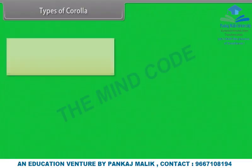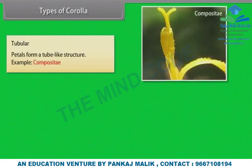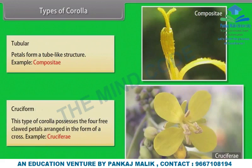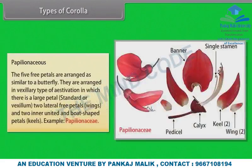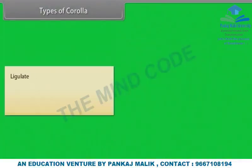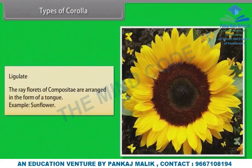Types of corolla: Tubular — petals form a tube-like structure, example Compositae. Cruciform — this type of corolla possesses four free petals arranged in the form of a cross, example Cruciferi. Papilionaceous — five free petals are arranged similar to a butterfly in vexillary estivation: a large petal standard or vexillum, two lateral free petals called wings, and two inner united boat-shaped petals called keels, example Papilionaceae. Ligulate — the ray florets of composite are arranged in the form of a tongue, example Sunflower.